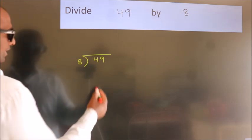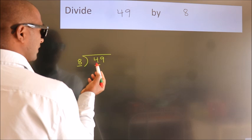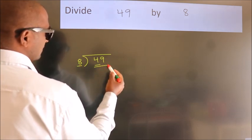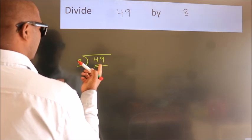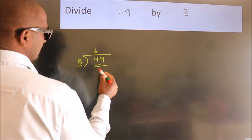Next, here we have 4, here 8. 4 is smaller than 8, so we should take 2 numbers: 49. A number close to 49 in the 8 table is 8 times 6, which is 48.